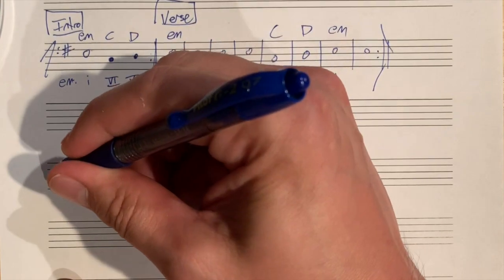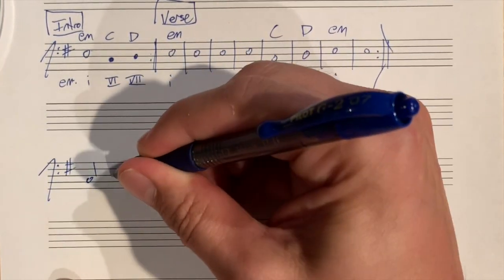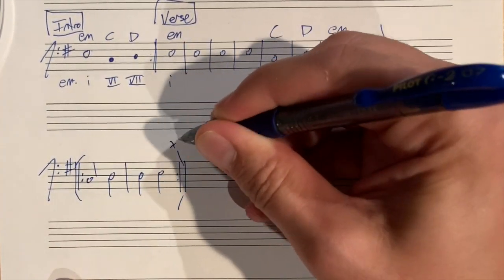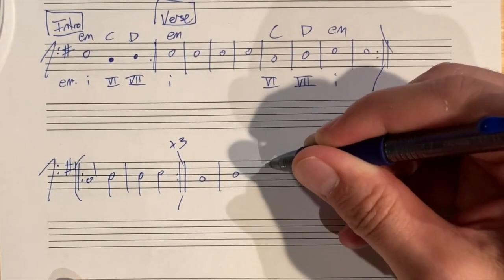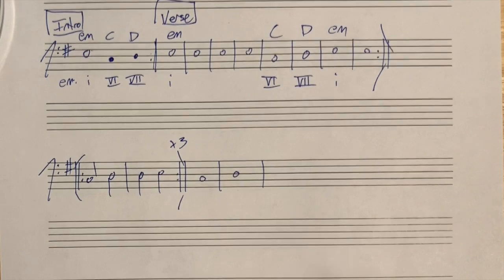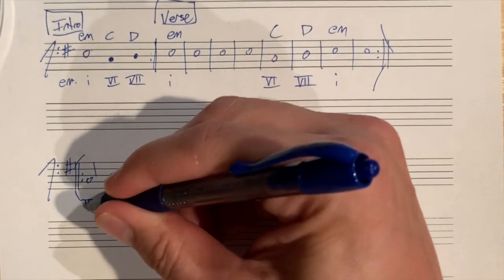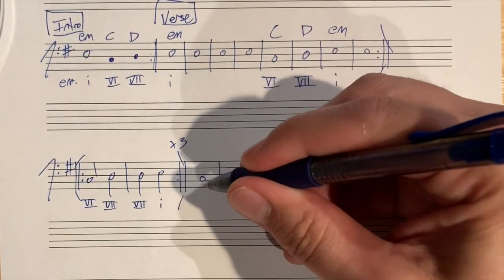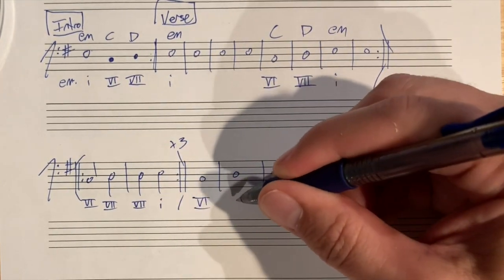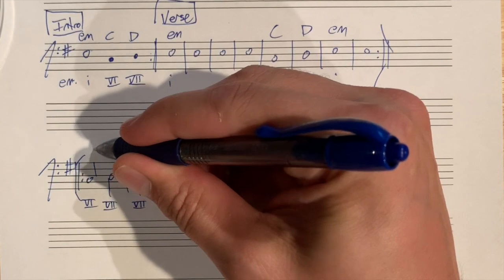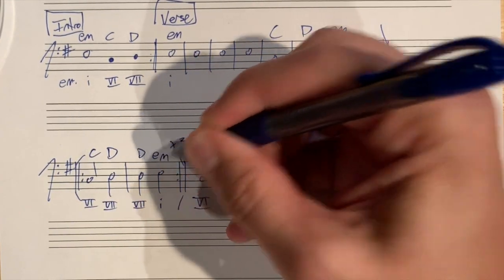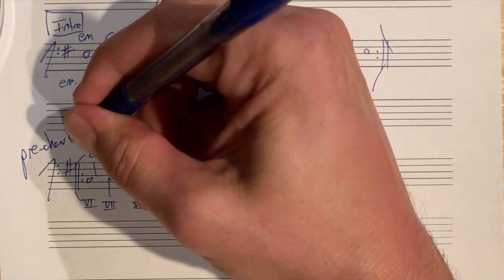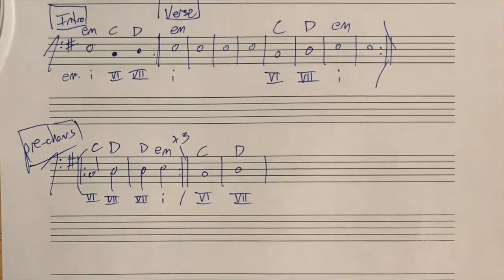Let's get this pre-chorus part. This happens three times. Then this happens for a bar. We're still in the key of E minor. This is a six chord and a seven chord. Still a seven chord and a one chord. That happens three times. And then the C chord is stretched out more, and the D chord is stretched out more. This is what I would call the pre-chorus of the song because it happens before the chorus.